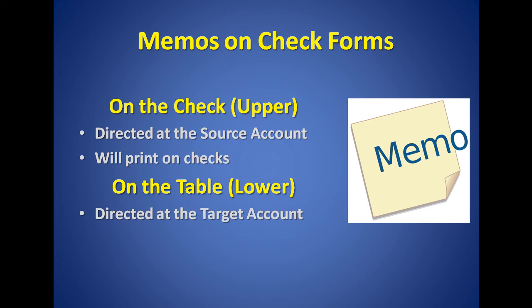Memos on a check form are a little different — there are two separate memo fields. The field on the upper portion of the form relates to the source account. For example, when writing a check for an expense, the bank account is the source account. Keep in mind that this memo field will print on the check and be visible to the recipient. The memo field in the table on the lower portion of the window is directed at the target account — in that same example, if writing a check for an expense, the expense account would be the target account.